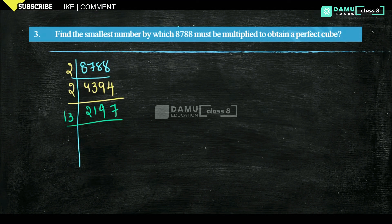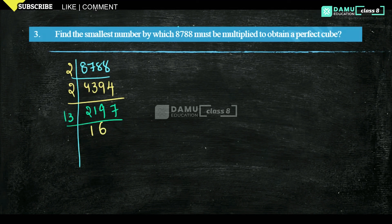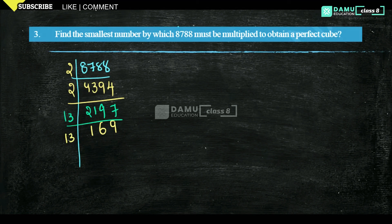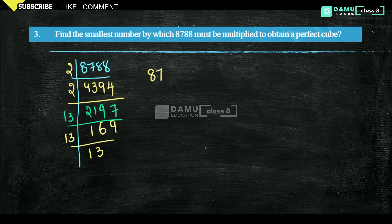Dividing by 13: 13 ones are 13, then 21 minus 13 gives 8, leaving 89. Then 13 sixes are 78. Then 13 nines are 117. Again it is divisible by 13. Then 13 thirteens are 169. So 8788 equals 2 × 2 × 13 × 13 × 13.